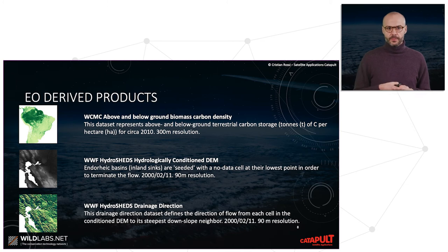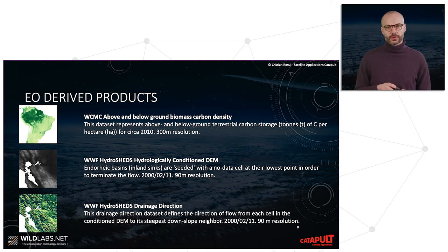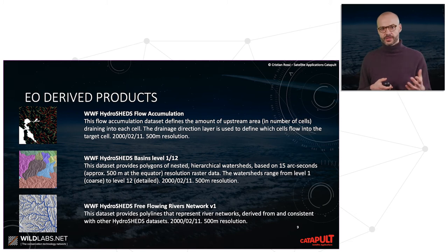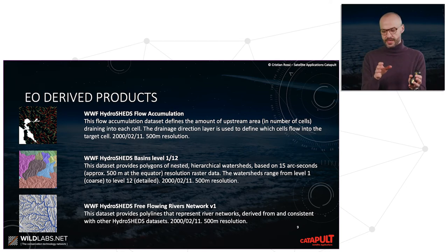There are several products from WWF linked to HydroSHEDS — hydrologically derived parameters such as hydrologically conditioned DEMs and drainage direction. There is also a WCMC product on below-ground biomass. WWF has products covering flow accumulation, HydroSHEDS basin levels, and free-flowing river networks — all already available for users to download and inspect.